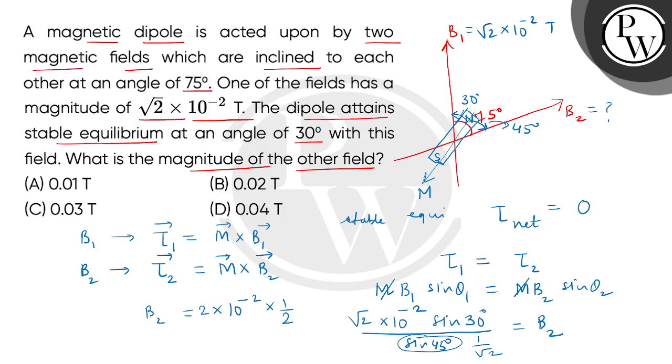So this equals B2. We have B2 magnitude 0.01 Tesla. So the correct option will be option A. Thank you.